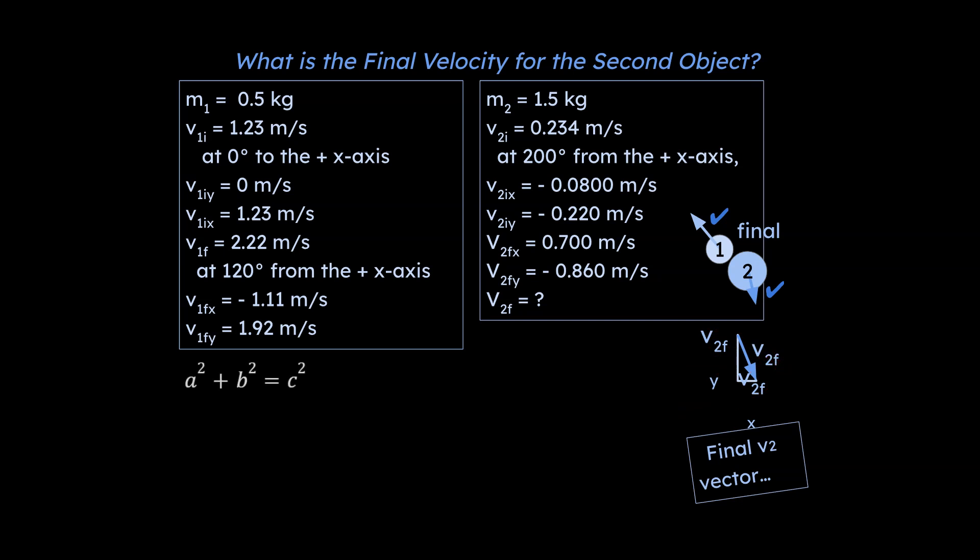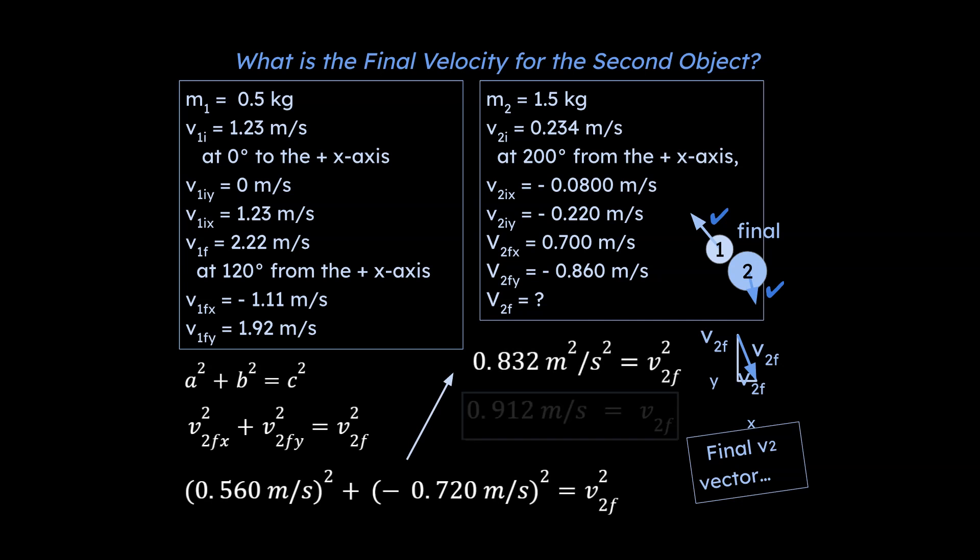Well what we're going to do is the Pythagorean theorem. So that's what we start doing. I go ahead and sub in our values and we end up solving for our unknown here, that's the v2 final in the y.